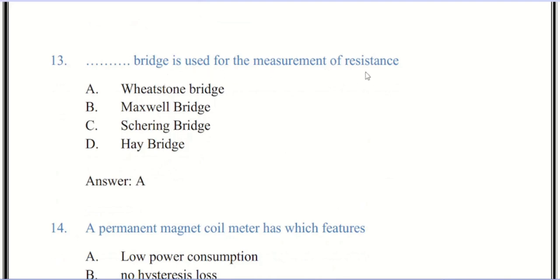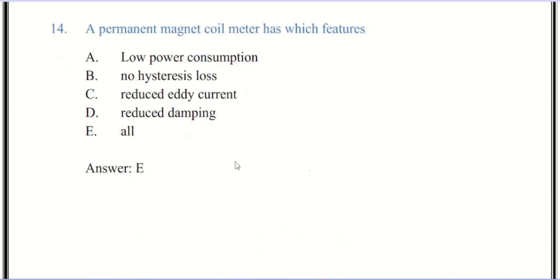Now we come to question number 13. Wheatstone bridge is used for the measurement of medium resistance. The correct answer is A. Wheatstone bridge is suitable to measure medium resistance. It cannot be employed for measurement of very low resistance as it introduces error on account of contact resistance, resistance of connecting leads, and thermoelectric EMF.